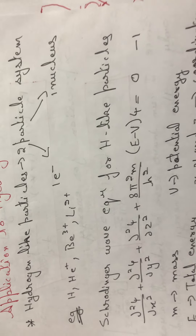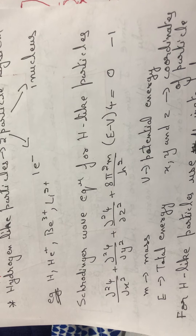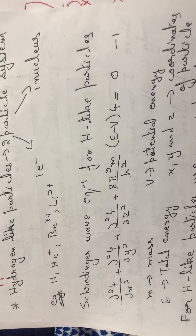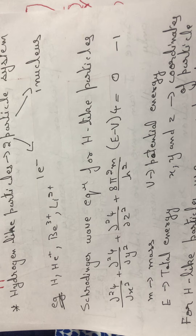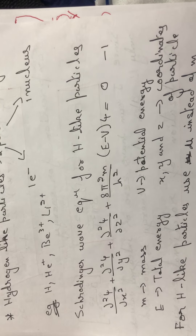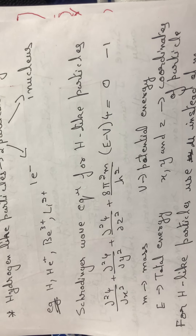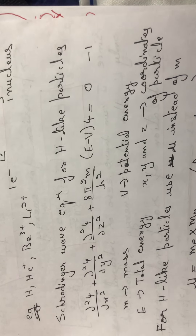Lithium Li²⁺ and so on. The Schrödinger wave equation for a hydrogen-like particle is the normal Schrödinger wave equation involving the Laplacian ∇²ψ and (E − V). The difference in the Schrödinger wave equation for different systems is only in the potential energy, so we will put the value of potential energy accordingly.